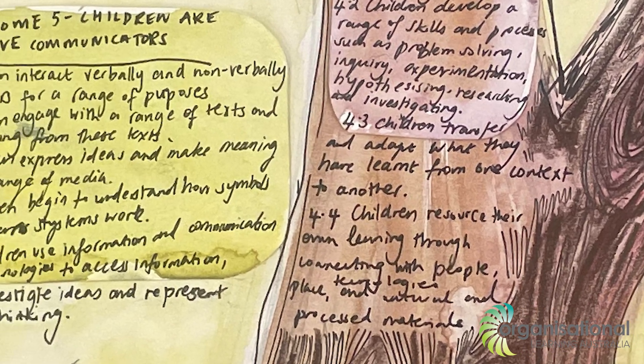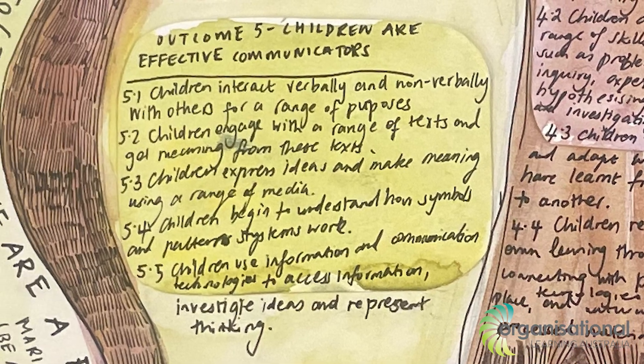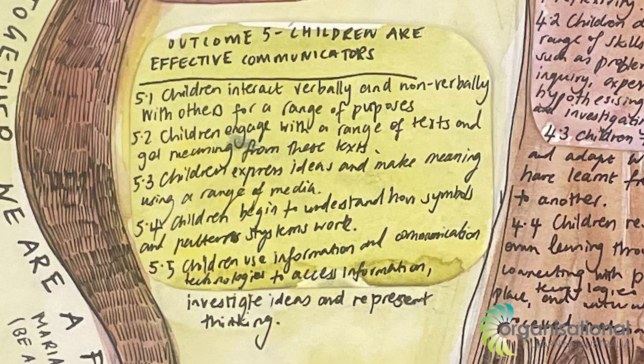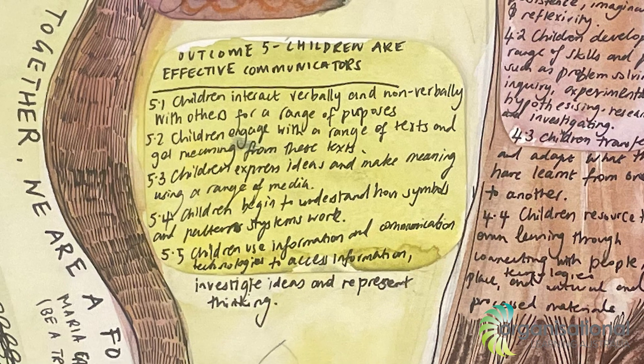And then outcome five, children are effective communicators — and that's all the flowers, all the different types of plants and all of the things that make up this ecosystem.